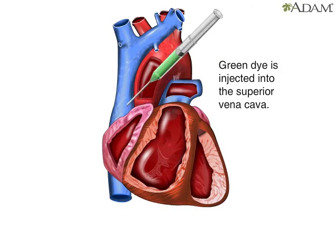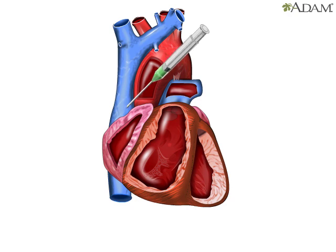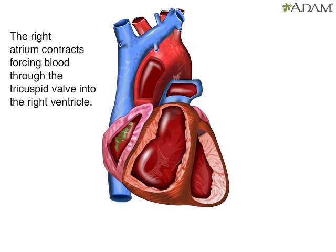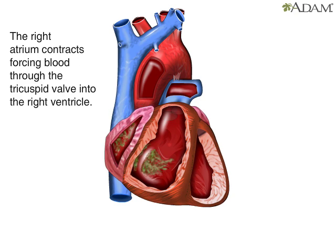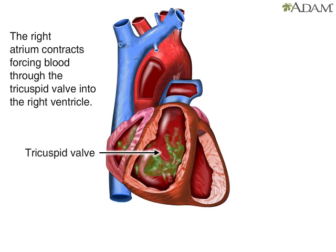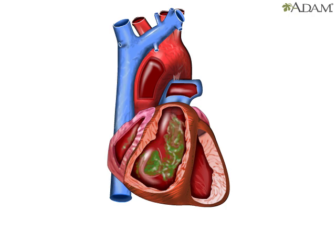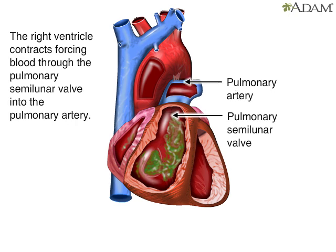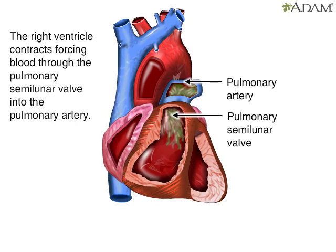Dye injected into the superior vena cava will pass through all the heart's chambers during one cardiac cycle. Blood first enters the heart's right atrium; a muscle contraction forces the blood through the tricuspid valve into the right ventricle. When the right ventricle contracts, blood is forced through the pulmonary semilunar valve into the pulmonary artery.